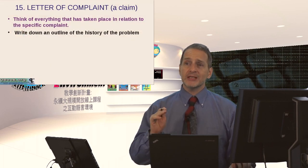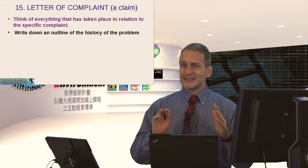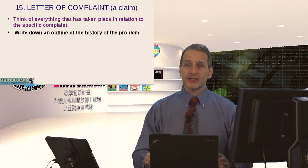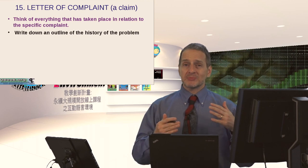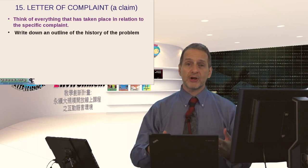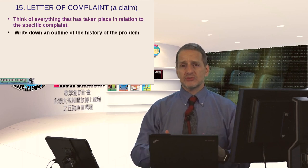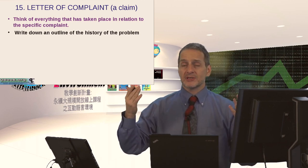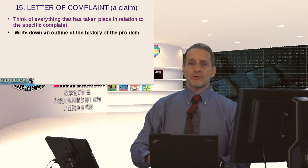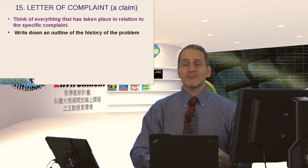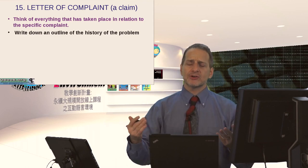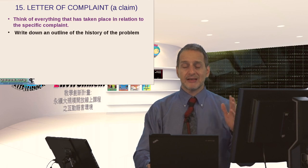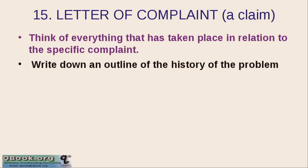Let's look at how a claim letter or complaint situation works. First, we need to think very clearly about what happened that's going to make you complain. You should write things down to be clear before you write your letter. Complaining doesn't just mean you don't feel good — it means something actually went wrong: a product is broken, doesn't function right, or doesn't do what it's supposed to do.